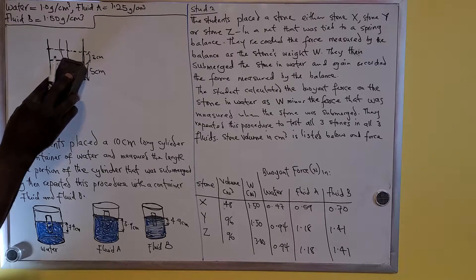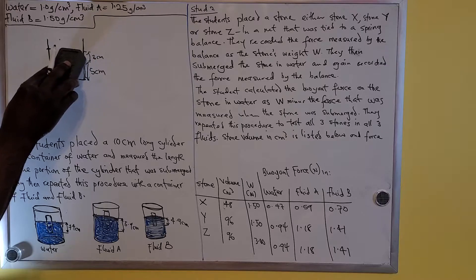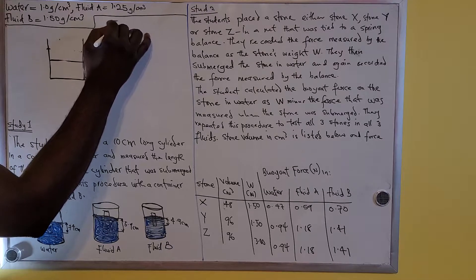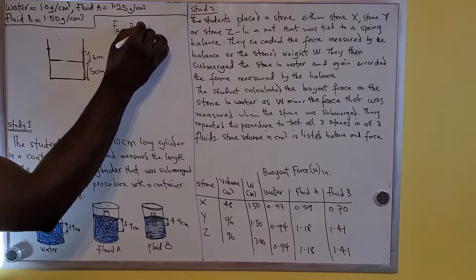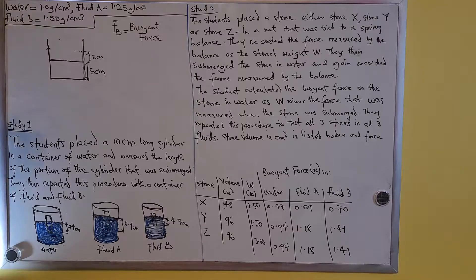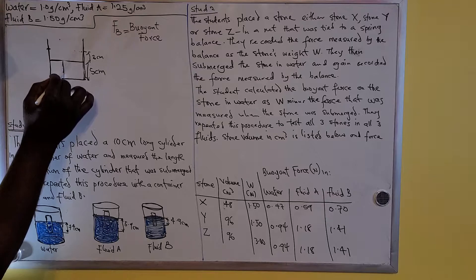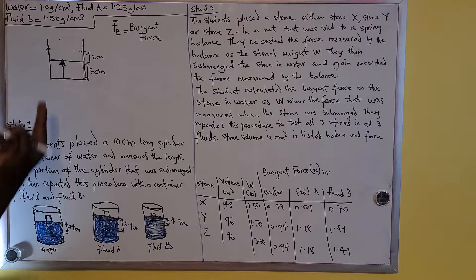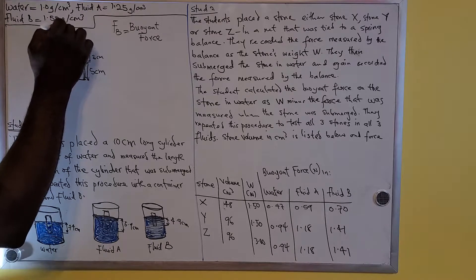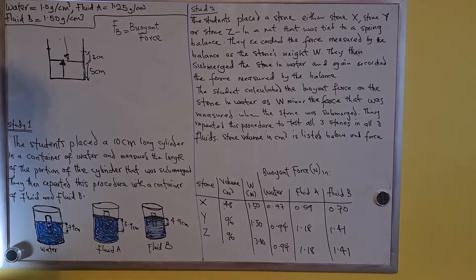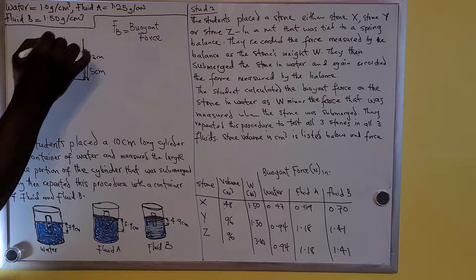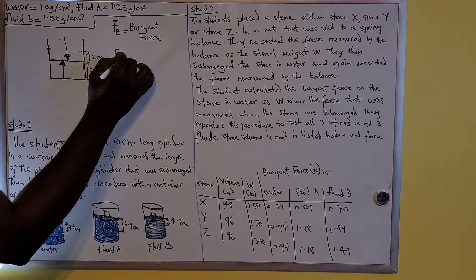Buoyant force — I'm going to call it FB — is the force that is always acting upward. That force in the water acting upward is buoyant force. The force acting downward, pushing something down, is gravitational force FG. If you jump up, you must come down — that force pulling you down is gravitational force. So you have two forces: FG going down and FB going up.